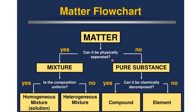For example, a sugar solution can be separated physically by evaporating the water, so it's a mixture. But if we take only water, you cannot separate hydrogen and oxygen just physically — you have to use a chemical process. Further, for a mixture, we check if the composition is uniform: if uniform, it is a homogeneous mixture; if not uniform, it is a heterogeneous mixture. Sand and water, for instance, has non-uniform composition, so it is heterogeneous.